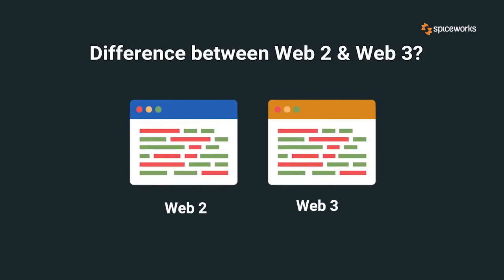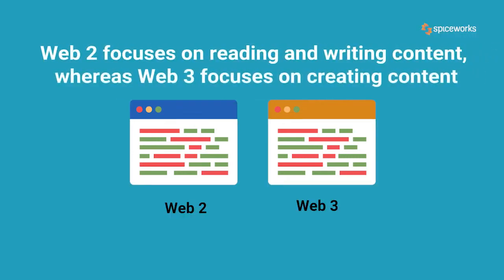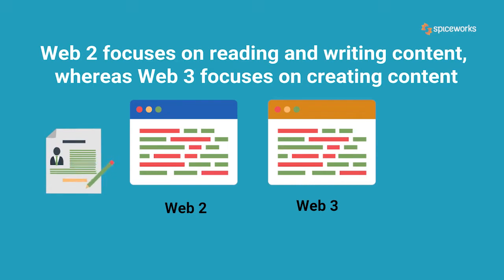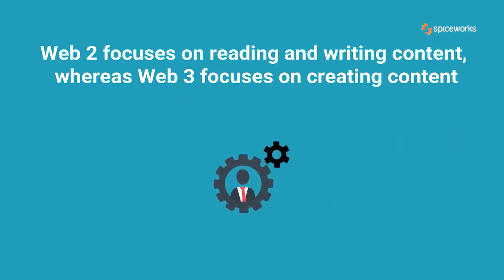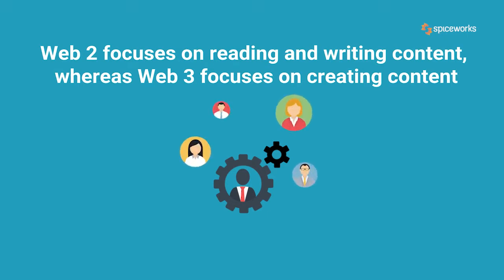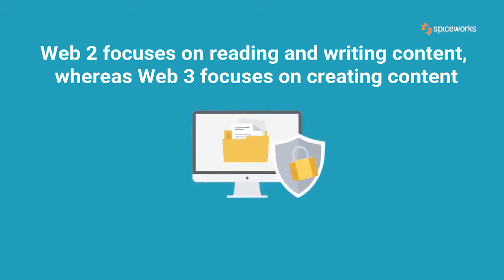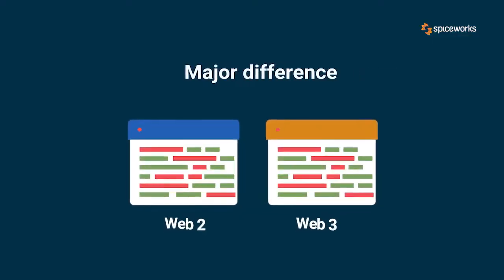Web 2 and Web 3 are similar technologies with similar backgrounds, but they approach challenges differently. The fundamental distinction is that Web 2 focuses on reading and writing content, whereas Web 3 focuses on creating content and the semantic web. Web 3 is much better at utilizing technology to facilitate information exchange amongst web users while simultaneously enhancing cyber security.